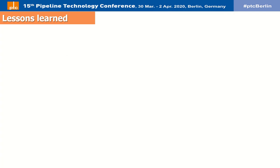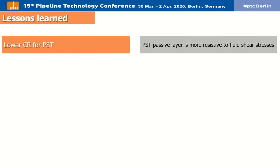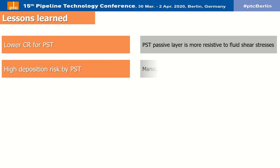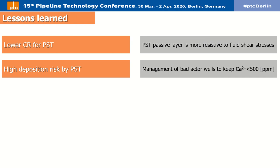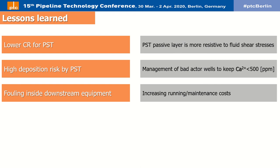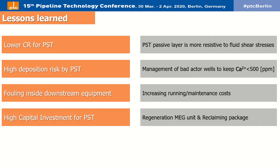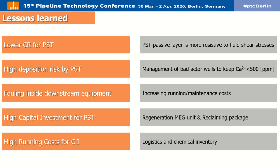Although pH stabilization and corrosion inhibitor methods each have their own pros and cons, successful implementation strongly depends on the operating conditions and system fluctuations. pH stabilization results in a lower corrosion rate and the passive layer is more resistive to fluid shear stresses, but it poses higher risks of deposition and requires management of bad actor welds. Both methods carry risks in downstream equipment that increase running or maintenance costs. pH stabilization requires high capital investment, whereas corrosion inhibitor injection incurs extra operational costs since it is not recycled in the system.